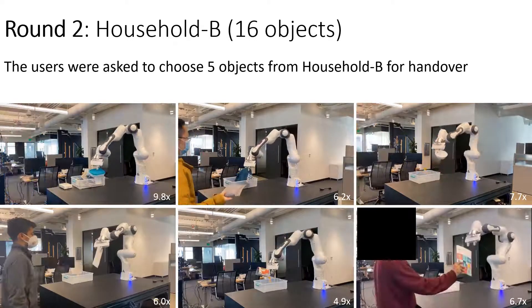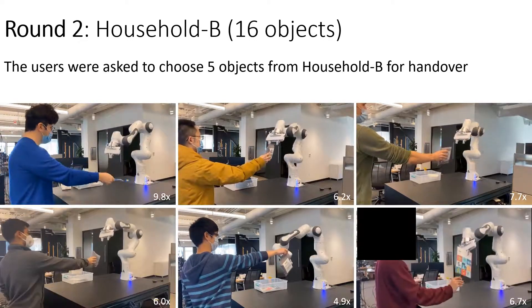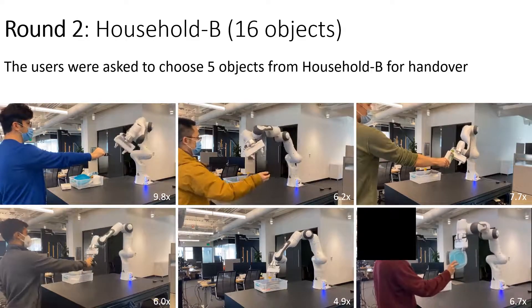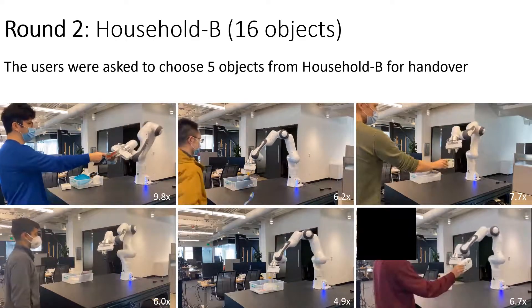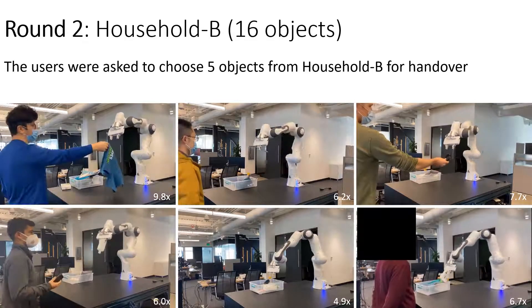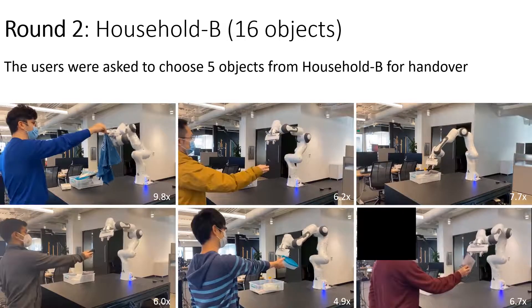In the second round, participants were asked to choose five objects from the second set, which has 16 diverse objects, and handed over to the robot one at a time. The robot succeeded in taking the wide range of objects chosen by participants across the different ways in which they presented them to the robot.